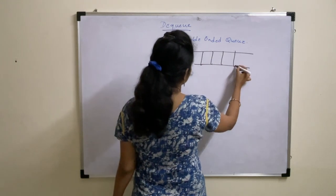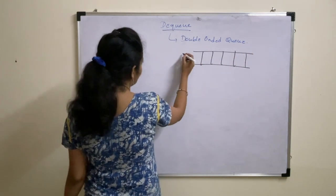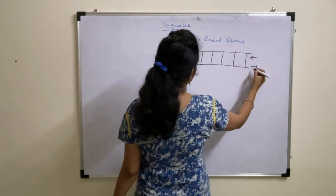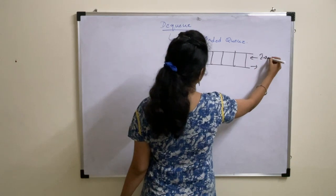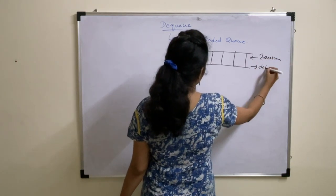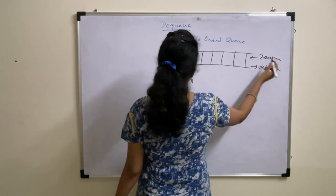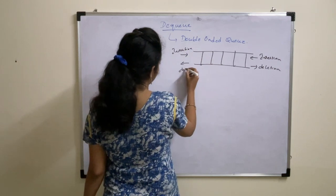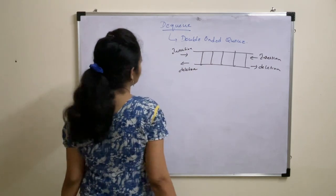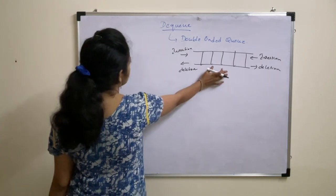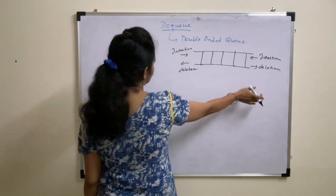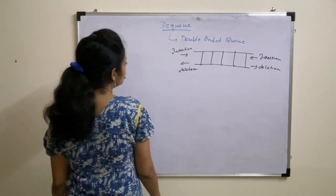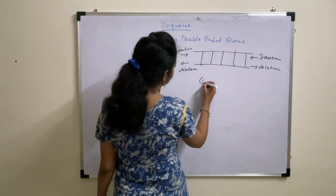This is the representation of a DQ. Here, insertion and deletion can be done at both ends. Insertion can be done in both ways, as well as deletion can also be done in both ways. That is the reason why this is called a double-ended queue. There are two types of double-ended queues.